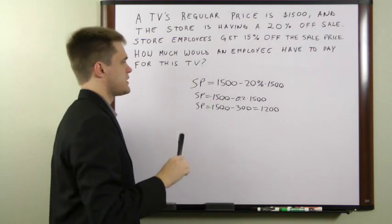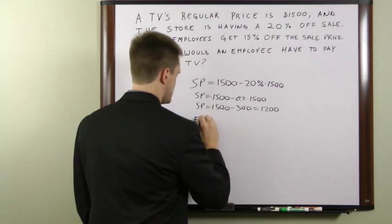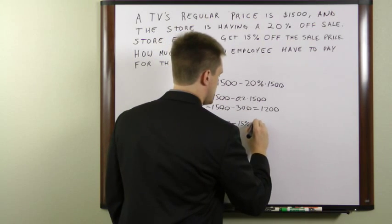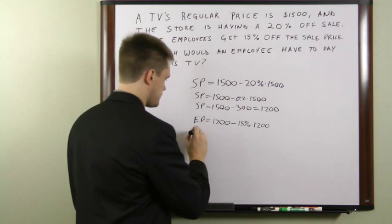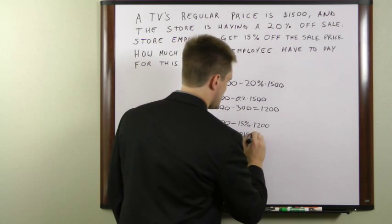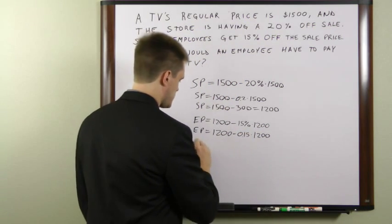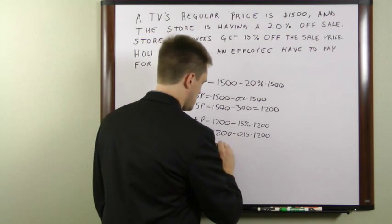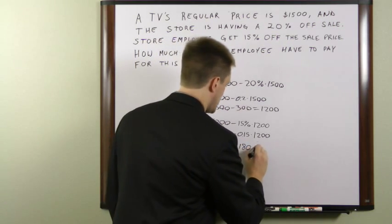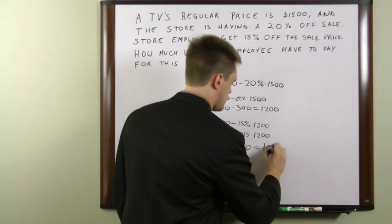Now to get the employee's price, we take 15% off of the sale price. So the employee price equals $1,200 minus 0.15 times $1,200. That is $1,200 minus $180, which gives us an employee price of $1,020.